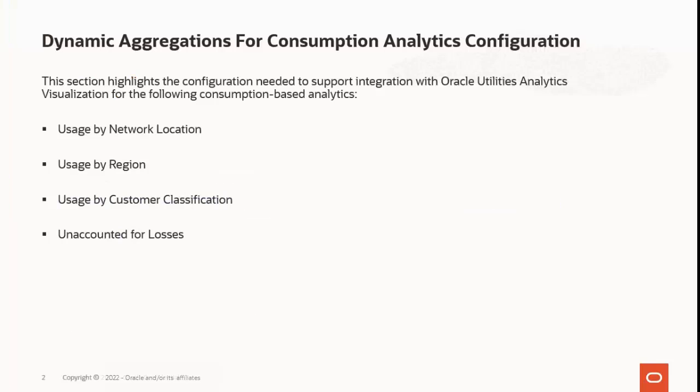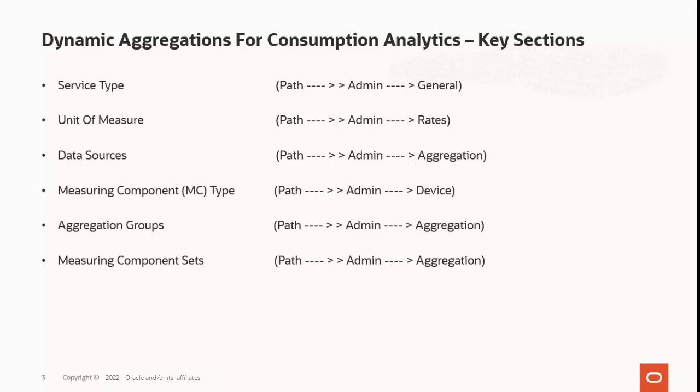Dynamic aggregation consists of the following consumption-based analytics: usage by network location, usage by region, usage by customer classification, and unaccounted for losses. The configurations of all four dynamic aggregations with consumption analytics are common, so during the demonstration I will show you the configurations of usage by network location and usage by customer classification.